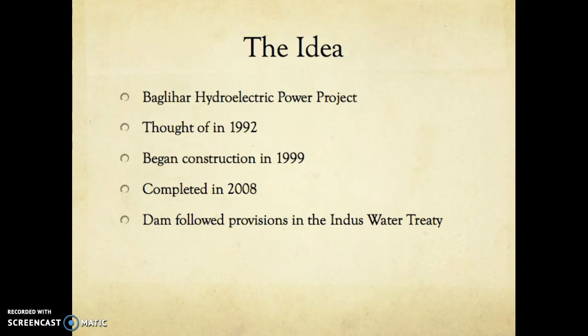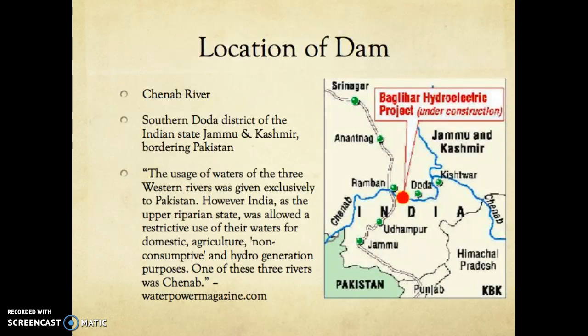So India was able to construct it, even though the dam is actually located on the Chenab River. The Chenab River is part of Pakistan's responsibility and they have ownership of it. Yet, as we said, there are certain provisions which allow India to step in and build things on Pakistan's rivers, so this dam was allowed.